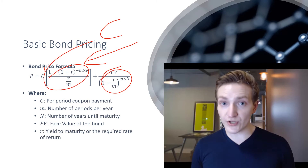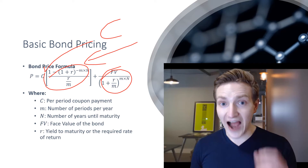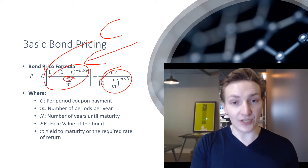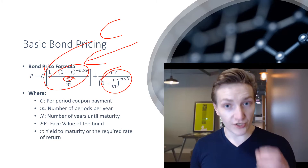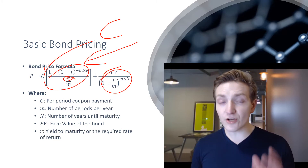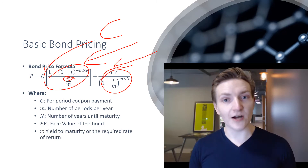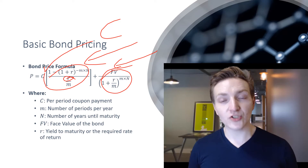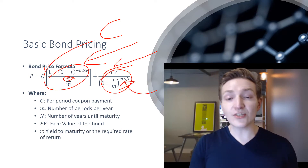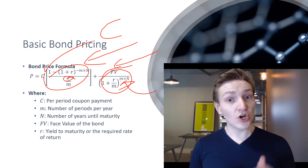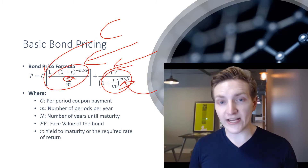We discount these coupons back at the yield to maturity, which I've called R, where R is the yield, otherwise known as the discount rate or the cost of debt — that's effectively what we need to solve for. The second component takes our face value FV, which is generally standardized, and we discount that back to the present value, again at the yield to maturity. So we're discounting back all future cash flows at the yield to maturity, which is what we need to solve for.